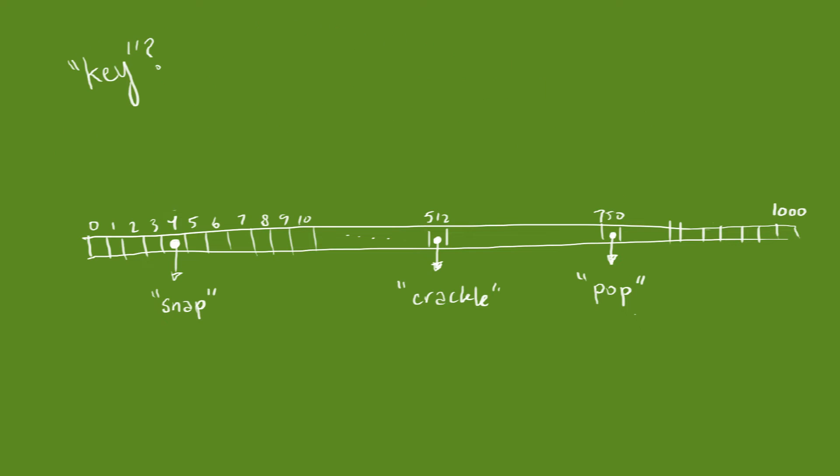When a request for a key comes in, we hash that key. We look at the point in the table where the hashed key would go. It's probably empty, so we walk forward in the array until we find a spot that has a server ID in it.